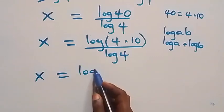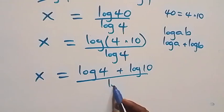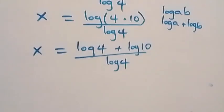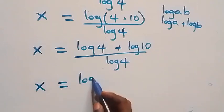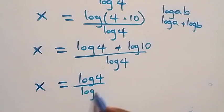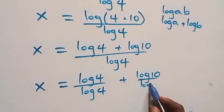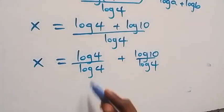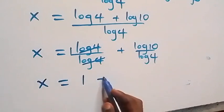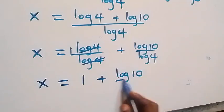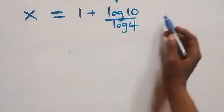This becomes x equals (log 4 + log 10) over log 4. We separate this into two fractions: log 4 over log 4 plus log 10 over log 4. The log 4 terms cancel to give 1, so x equals 1 plus log 10 over log 4.